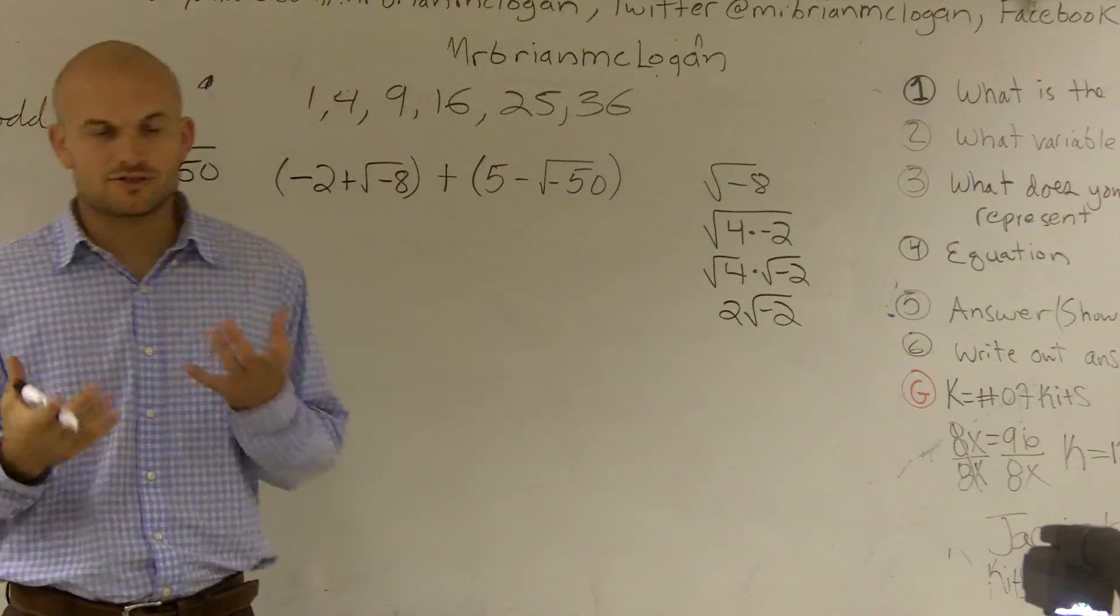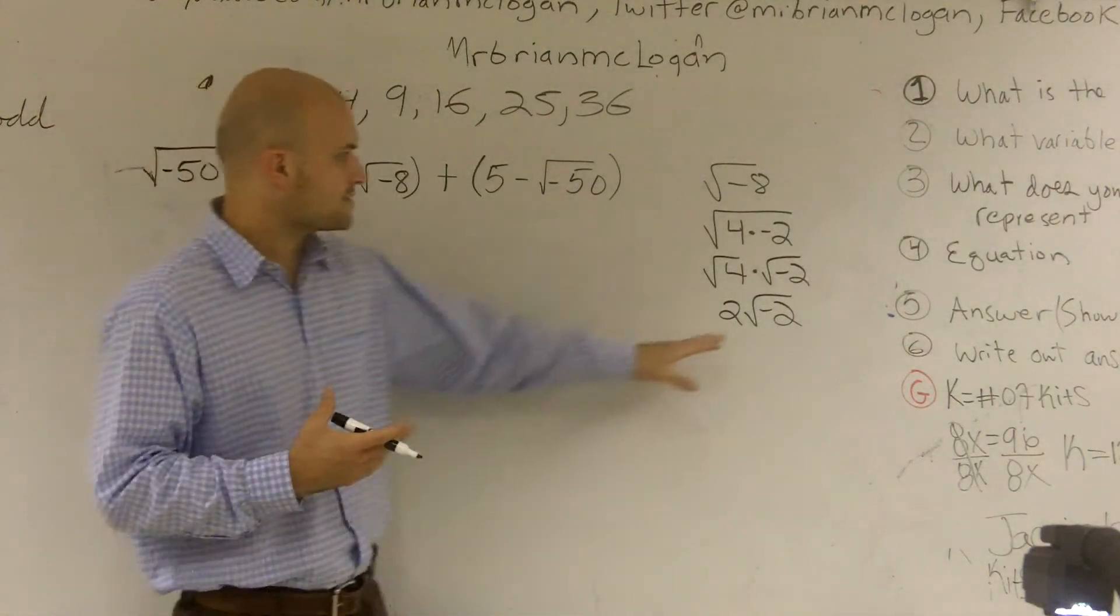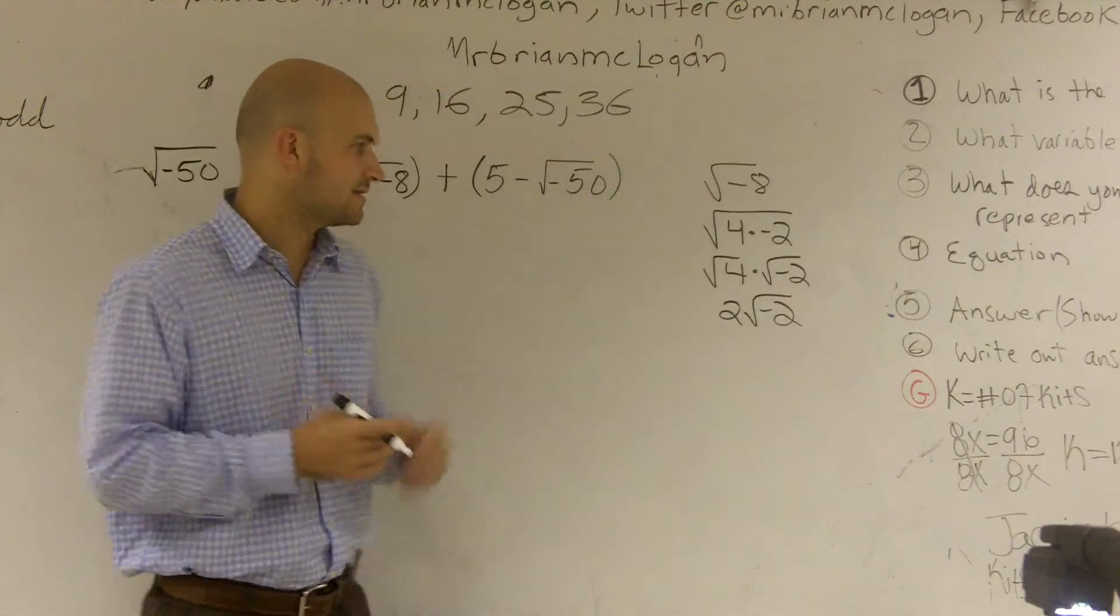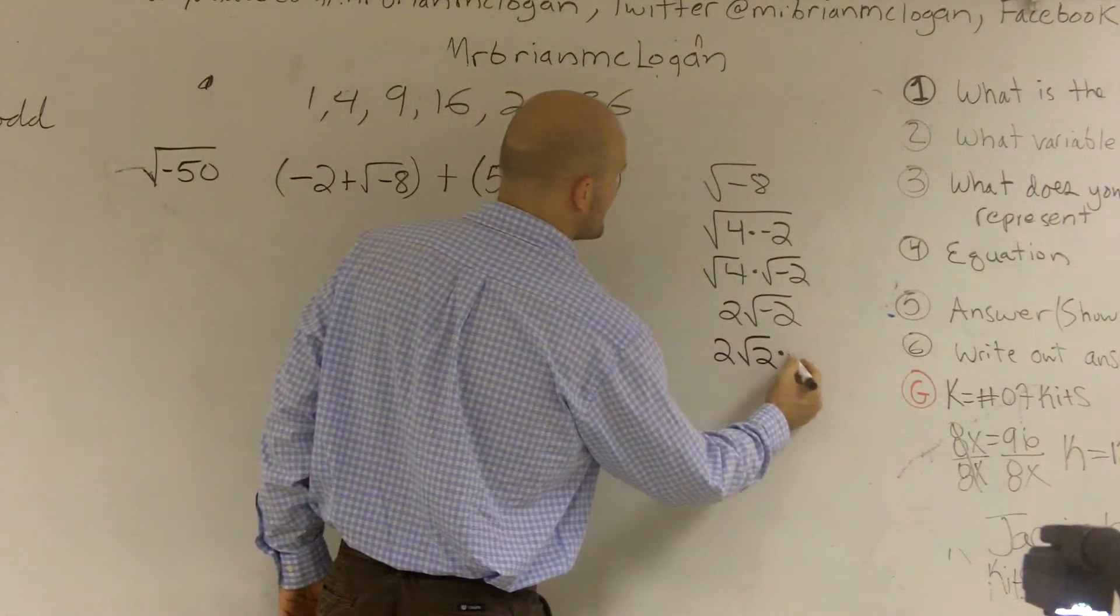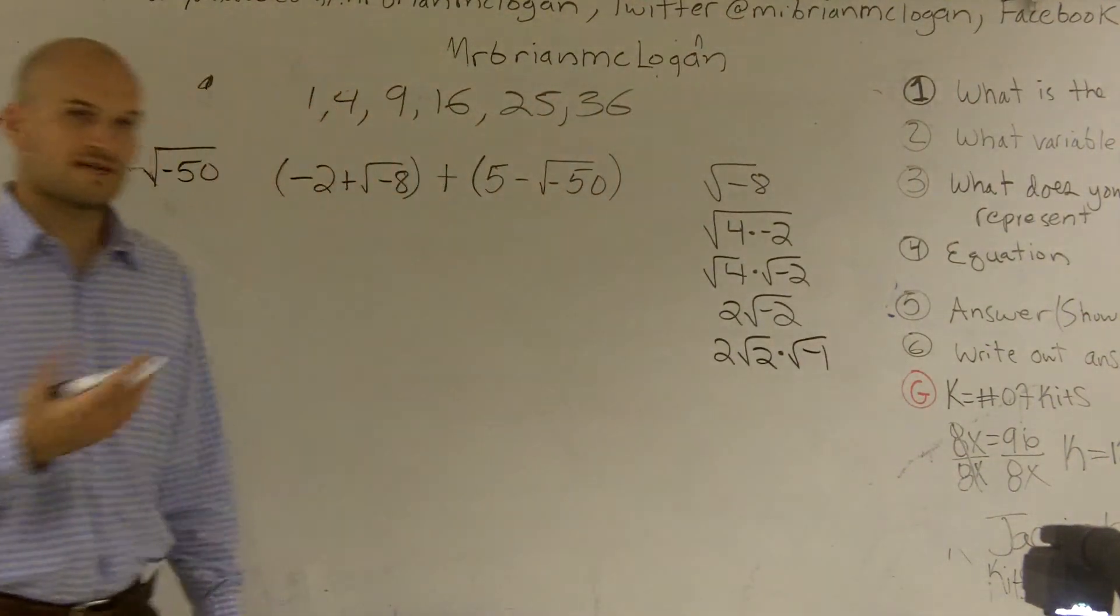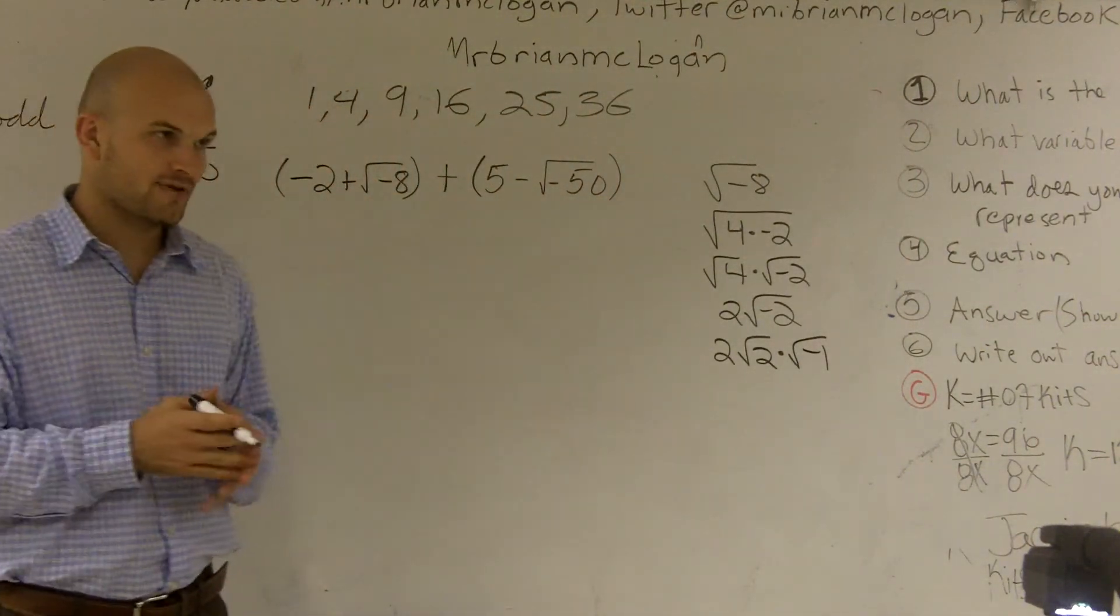The square root of negative 2. There's no two numbers that multiply to give you negative 2. So we need to break this up into 2 square root of 2 times the square root of negative 1. Because negative 1 times 2 is going to give you negative 2.